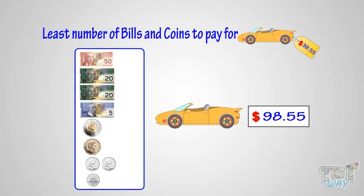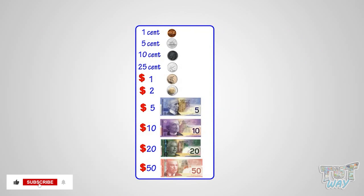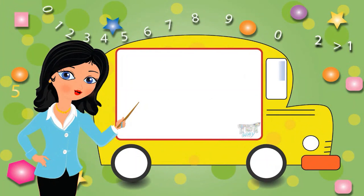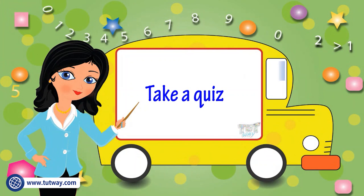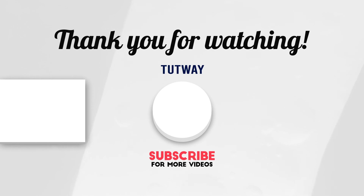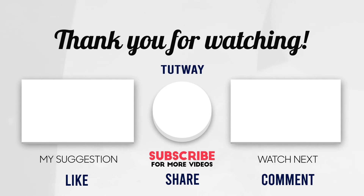So kids, today we learned making money amounts up to one hundred dollars and using the least number of bills and coins for that. Now you can go shopping with your mom and use your savings. Go ahead and take a quiz to learn more! Bye-bye! Thank you so much for watching. Don't forget to like, comment, and share this video. If you want to see more fun videos, hit that subscribe button. You can also follow us on Facebook and Instagram for more content. Bye-bye!